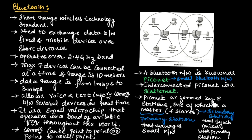A Piconet is formed by eight stations: one master node and seven slave nodes. The master node communicates with all other nodes. The master node is the primary station that manages the small network. Slave nodes are secondary stations that synchronize with the primary station for communication, meaning the slave nodes must synchronize with the master node to exchange data.